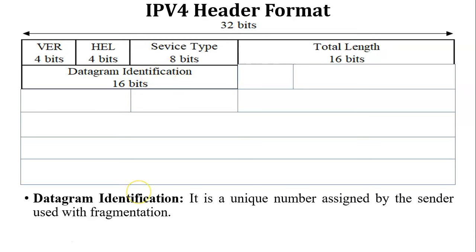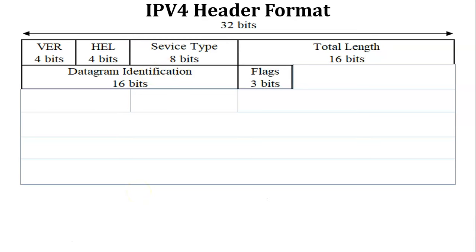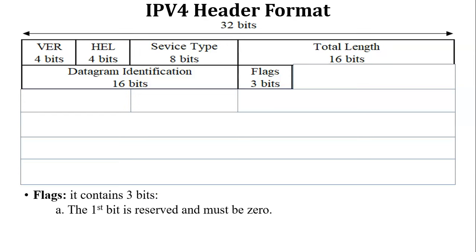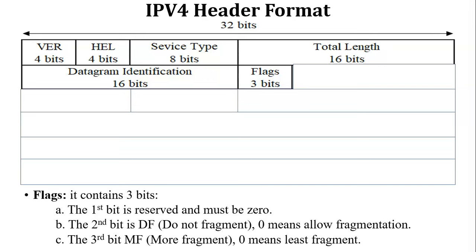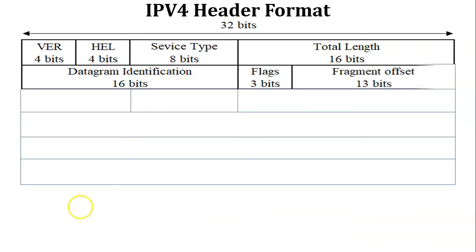The next field is Flags, which contains three bits. The first bit is always zero because it is the reserved bit. The second bit set to one means 'Do Not Fragment' the datagram; if the second bit is zero it means fragmentation is allowed. The third bit is the 'More Fragments' bit — if there is no fragmentation in the datagram it is set to zero.